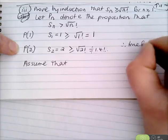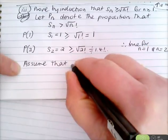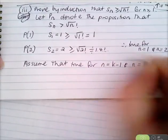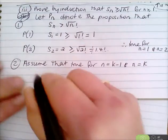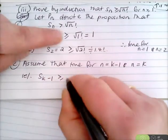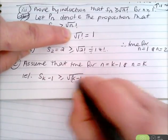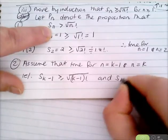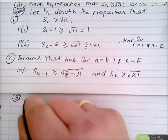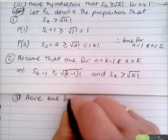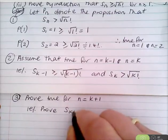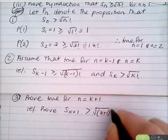Step 2: assume true for n = k − 1 and n = k. That is, assume S_{k−1} ≥ √((k−1)!) and S_k ≥ √(k!). Step 3: prove true for n = k + 1, i.e., prove S_{k+1} ≥ √((k+1)!).